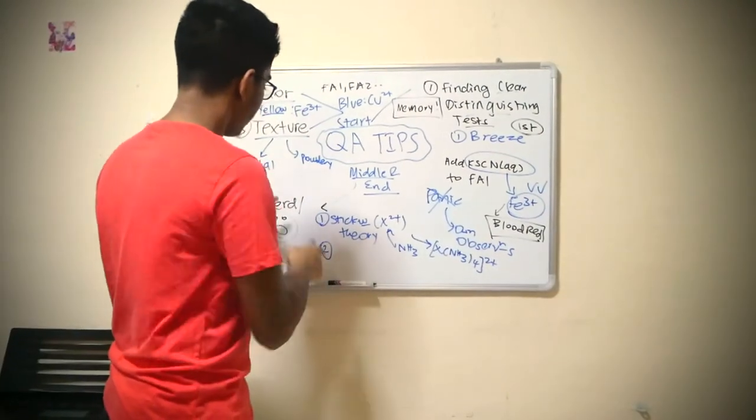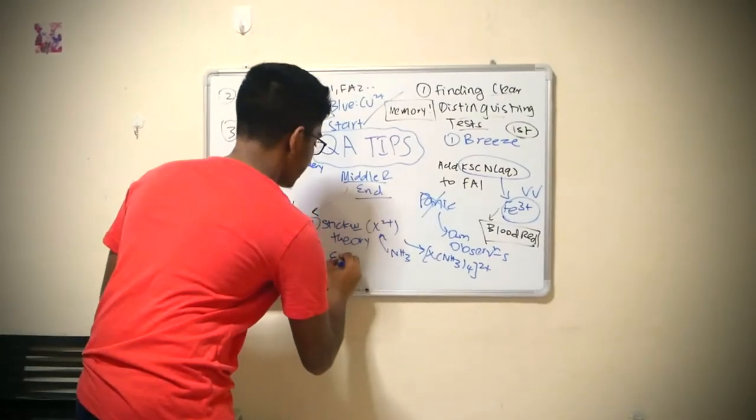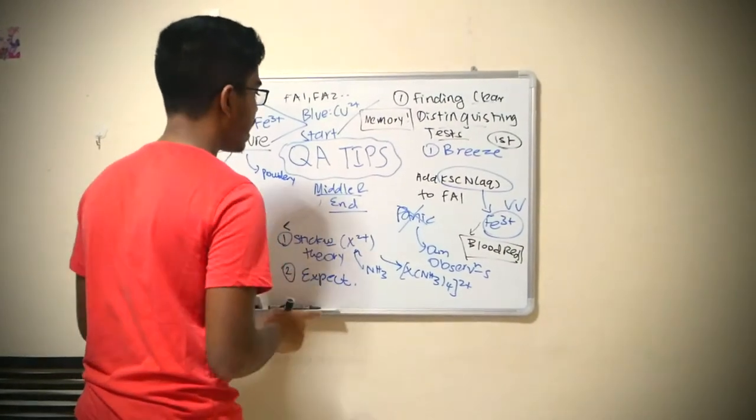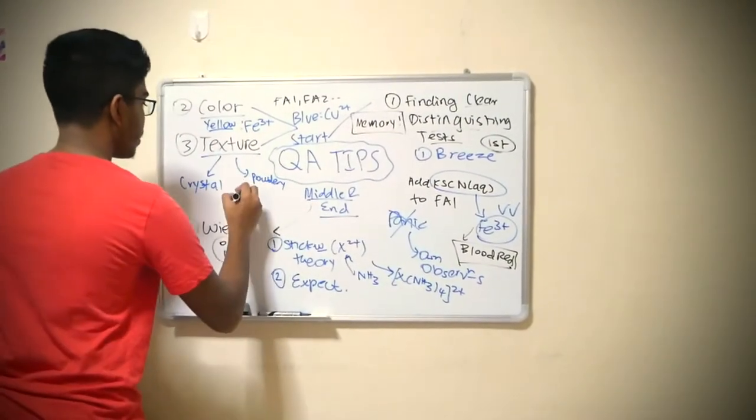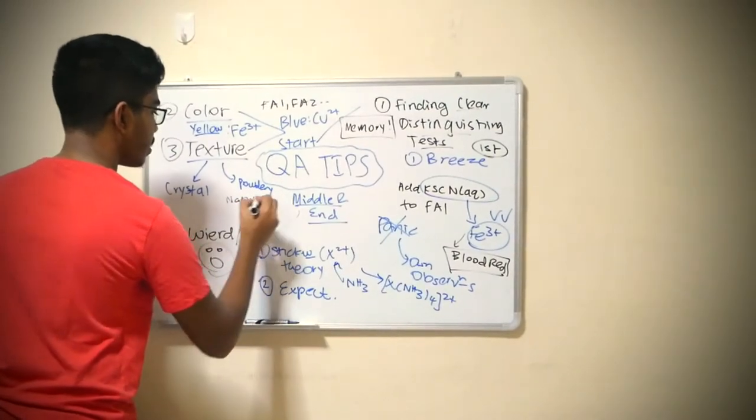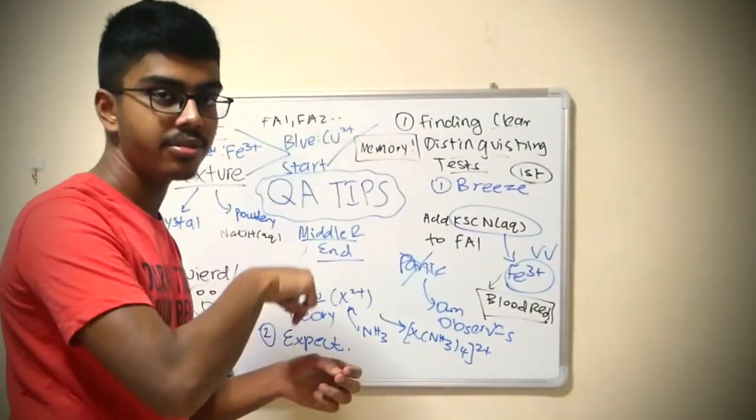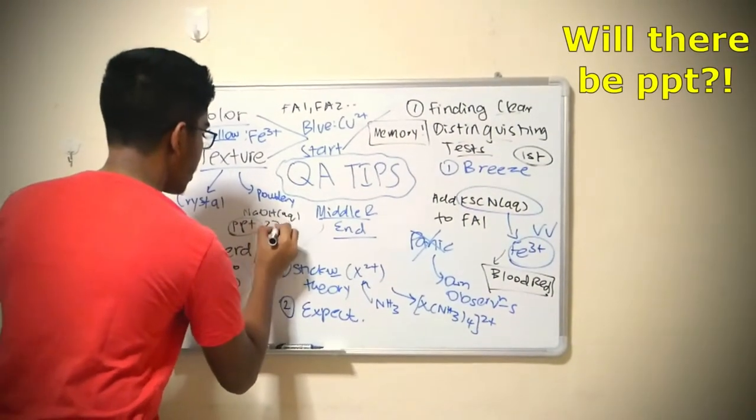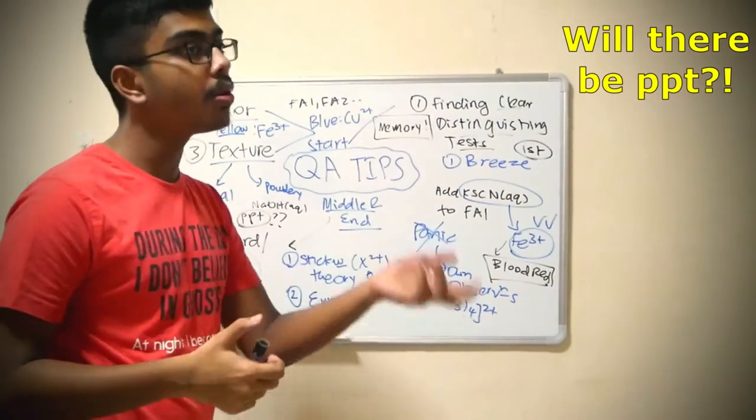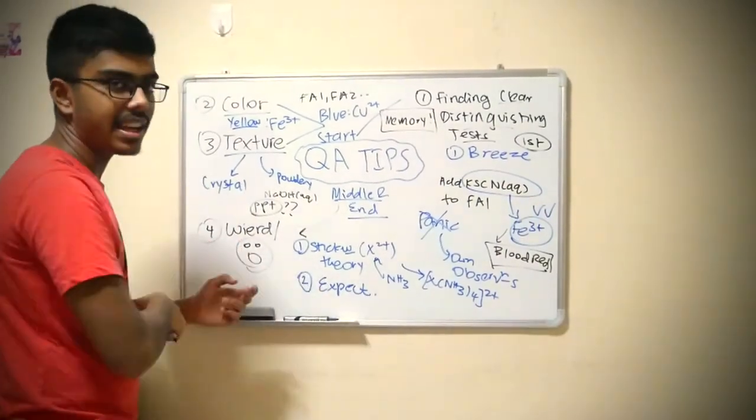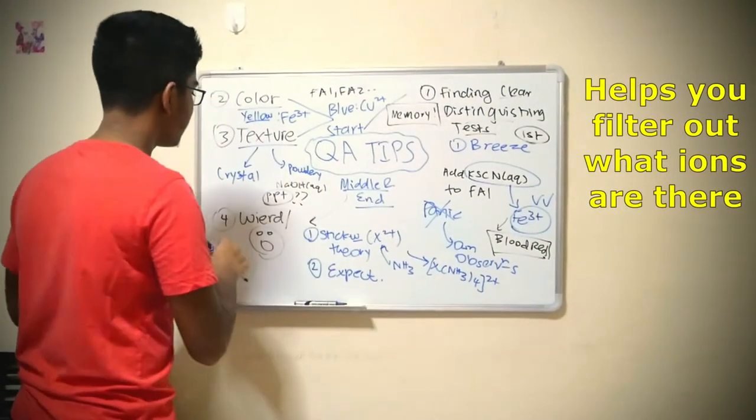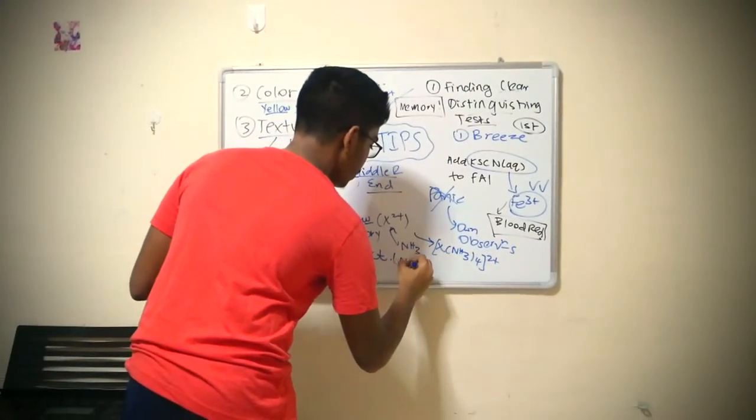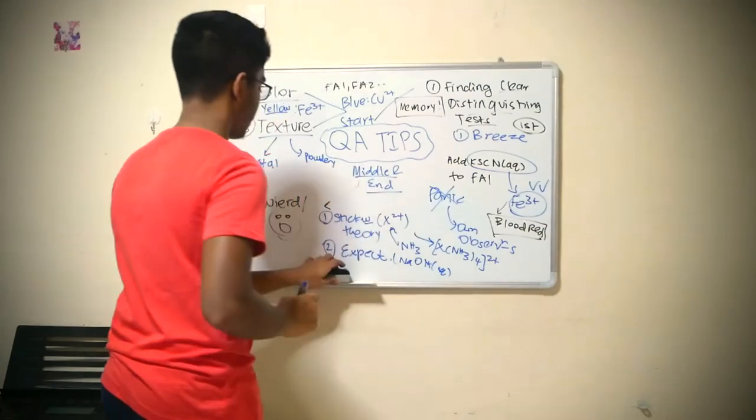And the next one, next tip for weird reactions is expect something. What do I mean by expect? A really good example is that they ask you to add NaOH aqueous. When you see NaOH aqueous, you should ask yourself: I'll be expecting to see a precipitate. Is there a precipitate? No. So it's probably these ions. Yes, it's these ions. Filtering out and finding the ions. This is a really important skill. So think about these two things when you're doing in the middle of this.